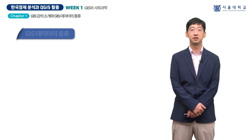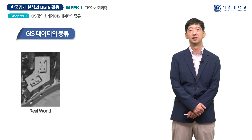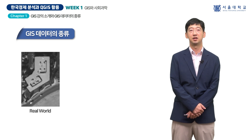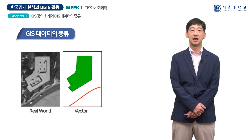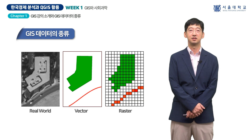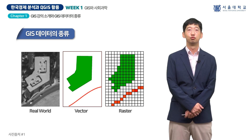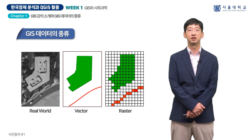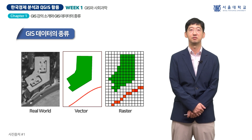GIS 데이터는 크게 두 종류로 분류할 수 있습니다. GIS 데이터 형태에는 벡터 데이터와 라스터 데이터가 있습니다. 우선 벡터 데이터에 대해 간단히 설명을 드리겠습니다.